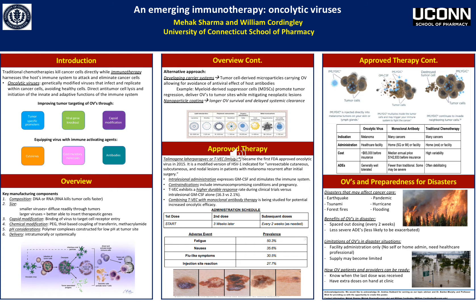For an overview of manufacturing, there are key components you need when manufacturing your oncolytic virus. These include having a DNA or RNA backbone — RNA typically kills tumor cells a little faster, so it is preferred. You also have to take into account the size of the virus, which can range from a smaller virus able to diffuse more readily through tumors, to a larger virus able to insert therapeutic genes. Depending on what you're looking for, size can guide you accordingly.